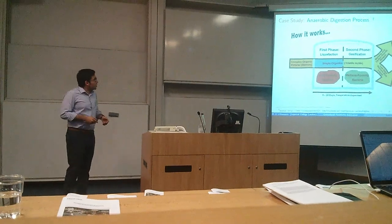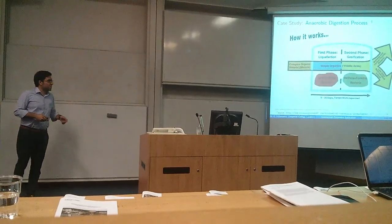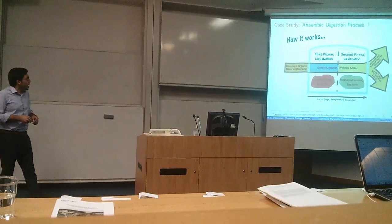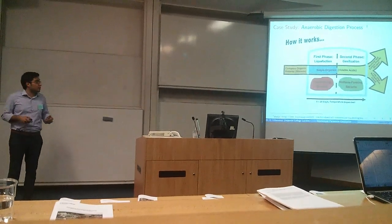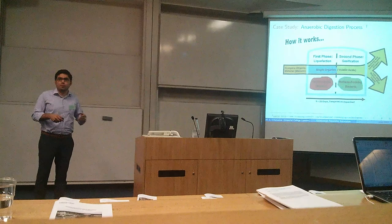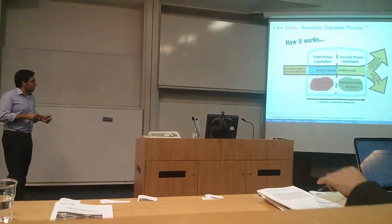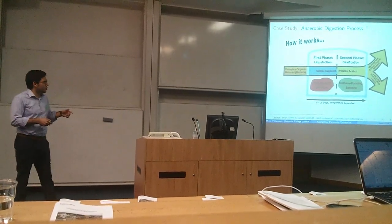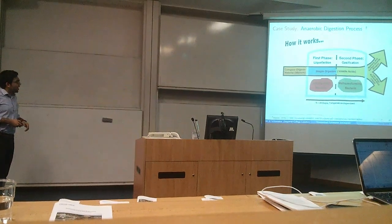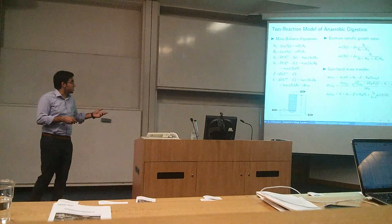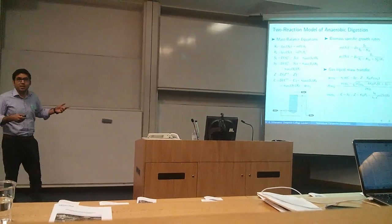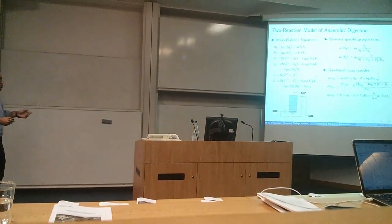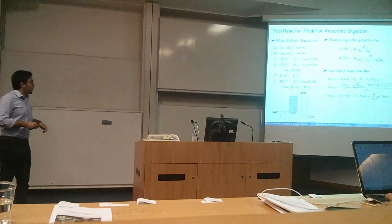Then we have a second case study, which is an anaerobic digestion process. It's a process that is used for wastewater treatment, among other applications. And it's a process where you take some complex organic material and you use different bacterial populations to break it down from these complex compounds to volatile acids and then convert them to methane and CO2. We can write a model for this process, which, as you can see, is more complex than the simple-to-compartment model that I presented before. We have some mass balance equations, some biomass growth rates, and some transfer equations. We have six states.